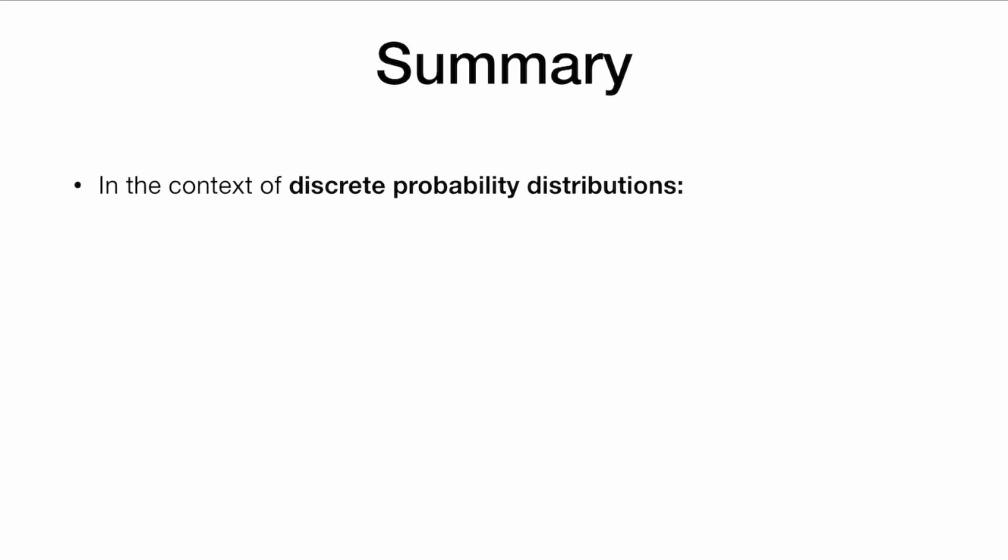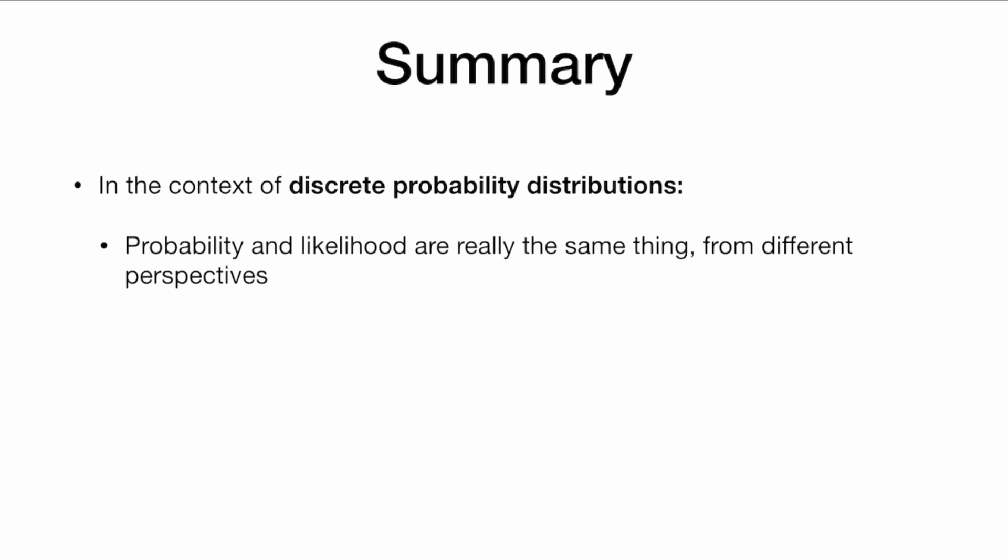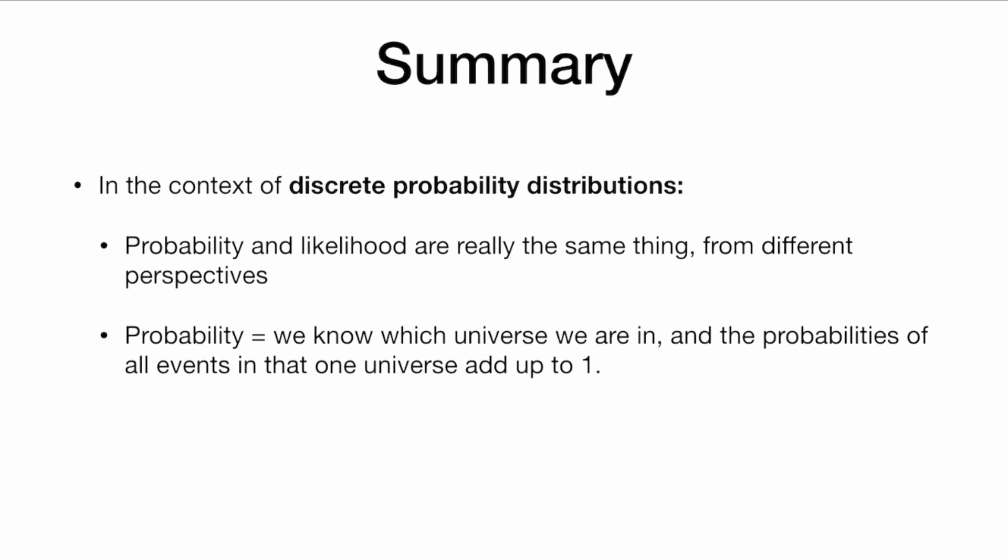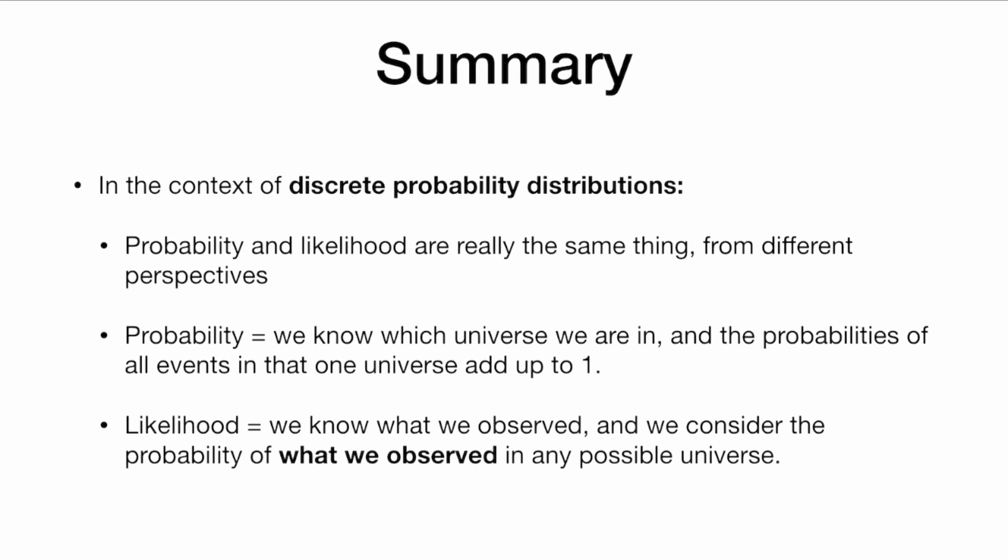So in summary, in the context of these discrete probability distributions where we're talking about coin flips, probability and likelihood are really the same thing but from different perspectives. Probability means we know which universe we're in and the probabilities all add up to one, whereas likelihood means we know what we observed and we consider the probability of what we observed in any possible universe.